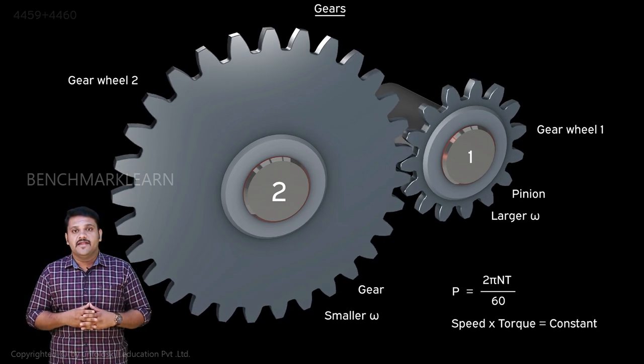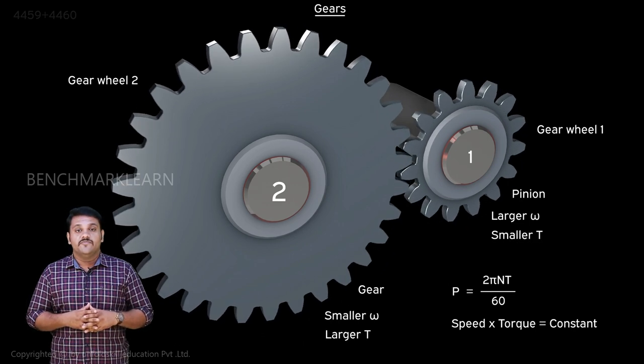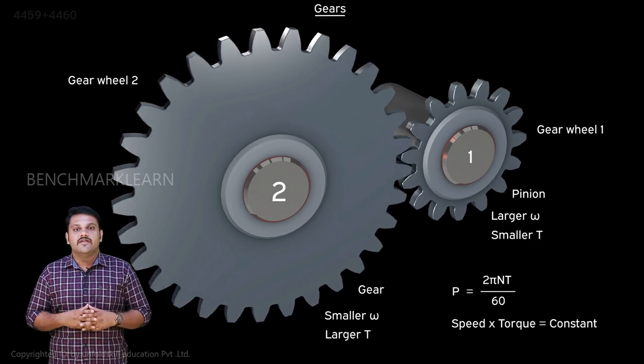So the pinion, which has higher speed, will have lower torque. The gear, which has lower speed, will have higher torque.